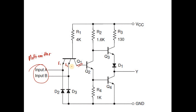The input transistor being used is a multi-emitter transistor. Multi-emitter means that there is more than one emitter terminal for the transistor. We have two inputs, therefore we have two emitters. Let me try to explain the electrical connection of emitters E1 and E2.